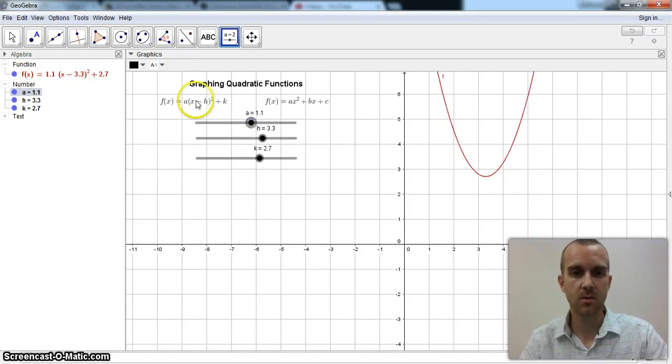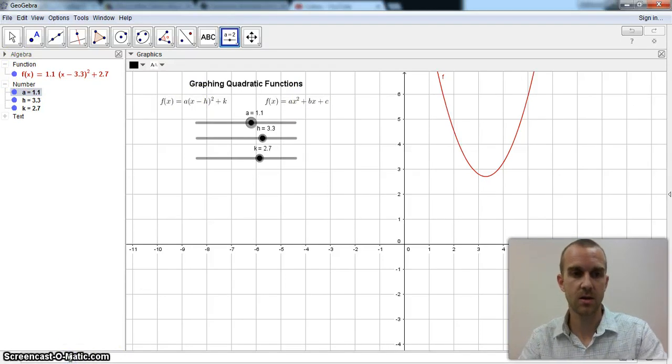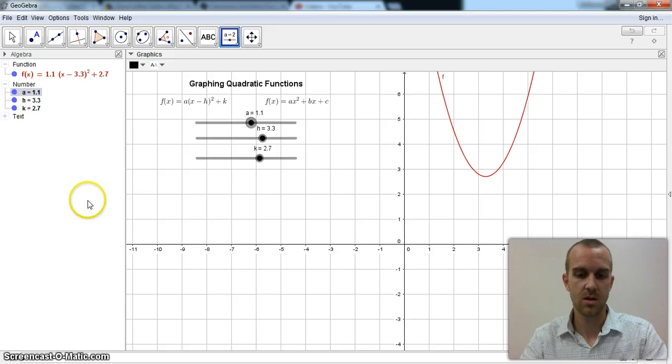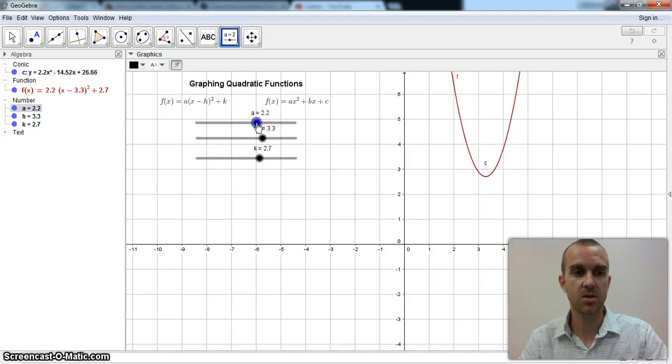Now say you want to know what is the standard form or the general form that matches up. If I use the y equals instead of the function notation, so if I do y equals and I enter the exact same vertex form, a times x minus h quantity squared plus k, watch, it automatically creates the corresponding general form of my function.